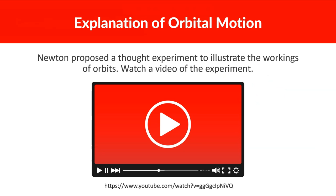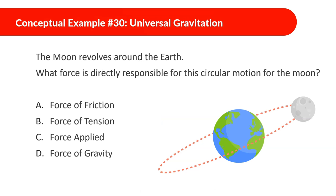Orbiting objects are in a continuous state of falling toward the gravitational center, but continuous tangential motion prevents them from colliding with the central body — resulting in a stable circular or elliptical orbit. The last question: what force is directly responsible for the moon's circular motion around the Earth? That force is gravity.